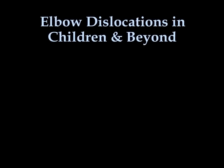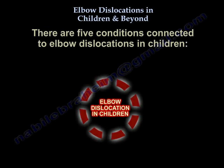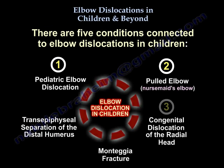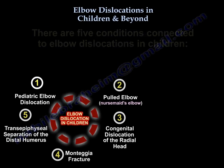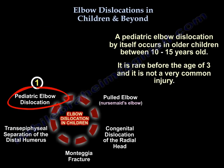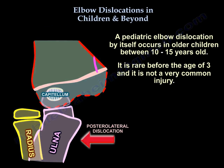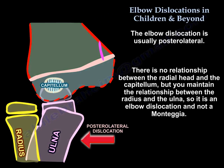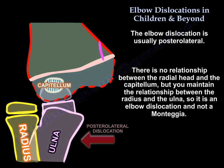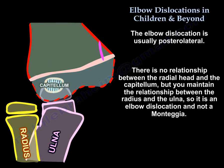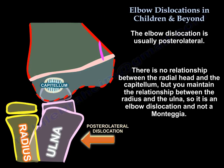There are five conditions connected to elbow dislocations in children. The pediatric elbow dislocation occurs in older children between 10 to 15 years old. It is rare before the age of three and not a very common injury. The elbow dislocation is usually posterolateral. There is no relationship between the radial head and the capitellum, but you maintain the relationship between the radius and the ulna — so it is an elbow dislocation and not a Monteggia.